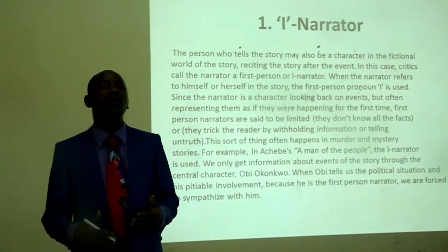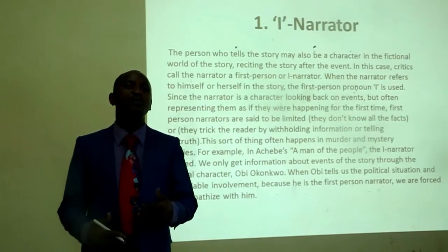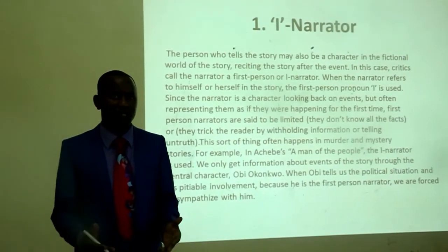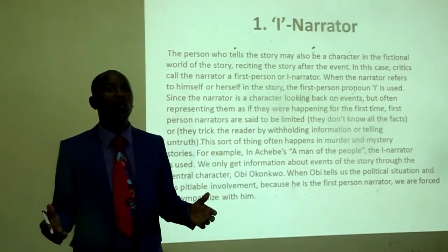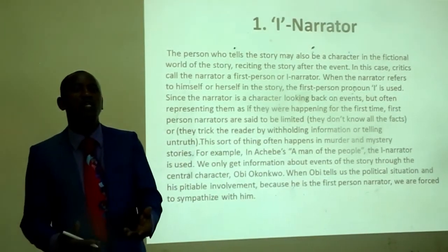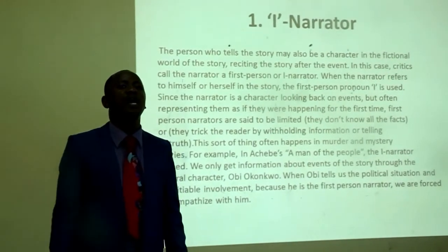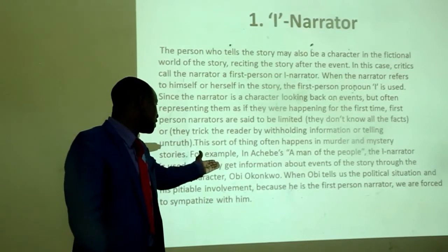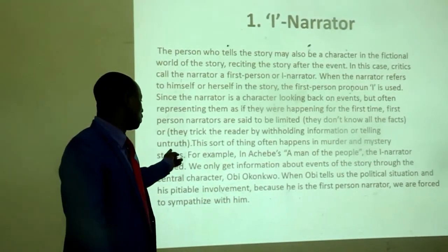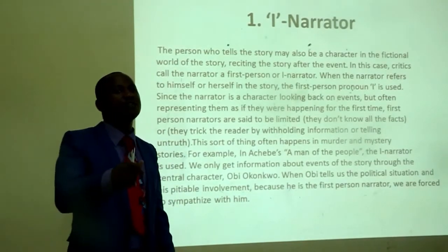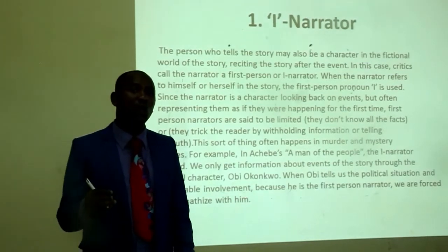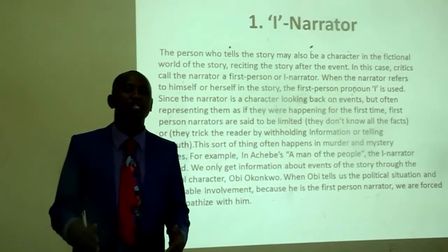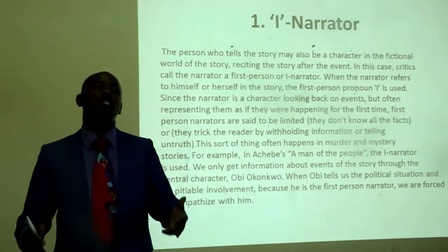Since the narrator is a character looking back on events, but often representing them as if they were happening for the first time, first-person narrators are said to be limited. They don't know all the facts, or they trick the reader by withholding information or telling untruth. This sort of thing often happens in murder and mystery stories. For example, in No Longer at Ease, the I-narrator is used. We only get information about events of the story through the central character, Obi Okonkwo. When Obi tells us the political situation and his pitiful involvement, because he is the first-person narrator, we are forced to sympathize with him.